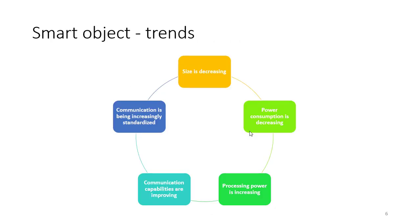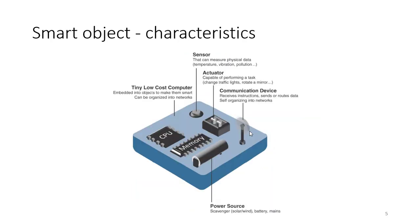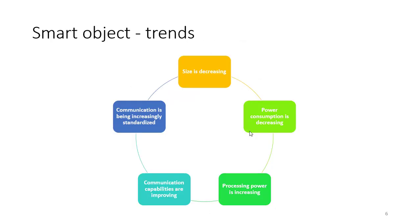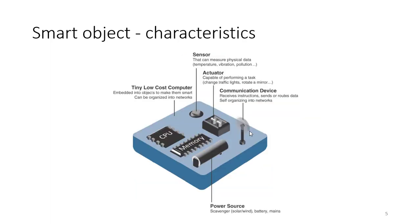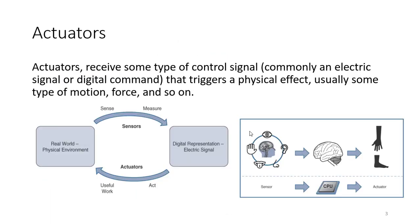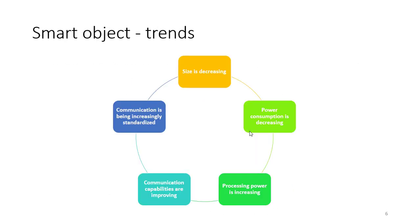The trends for smart objects: size is decreasing day by day, power consumption is also decreasing as we want to conserve battery life, processing power is increasing, and communication capabilities are improving. The biggest concern is standardization — there are many manufacturers in the IoT domain, and communication is being increasingly standardized.